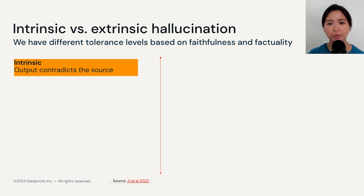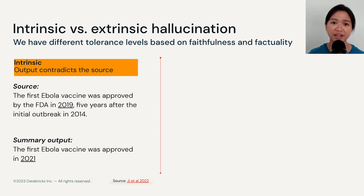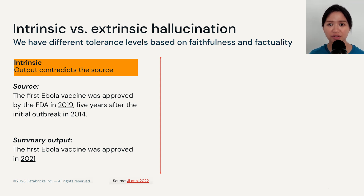Intrinsic hallucination refers to when the output directly contradicts the source. For example, if I give a source text indicating the first Ebola vaccine was approved by the FDA in 2019, but a summary output indicates it was approved in 2021, this is a clear case of contradiction. The output is not faithful to the source text, and it is also completely not factual.